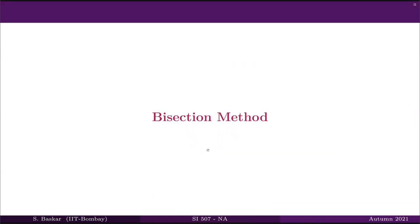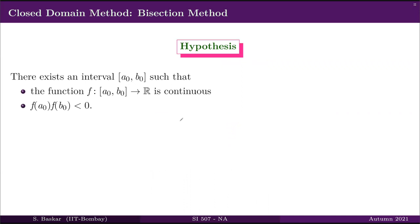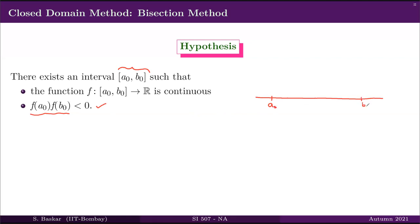The bisection method is a closed domain method where we first assume that there exists an interval, say a₀, b₀, such that f is a continuous function and f(a₀)·f(b₀) < 0. We always assume f is continuous. Given this condition, we have two points a₀ and b₀ where either f(a₀) < 0 and f(b₀) > 0, or the other way around.